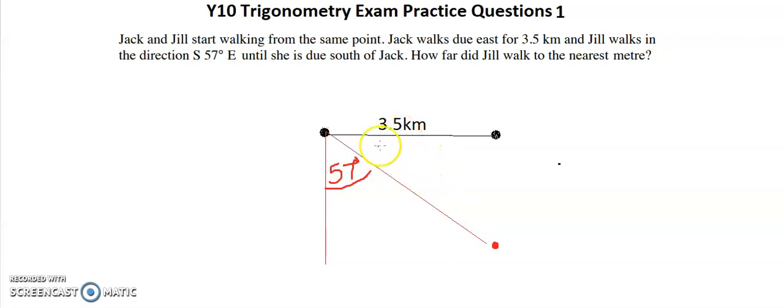So that means I'm just going to work out this angle right here. And this angle would be 90 take away 57, which equals 33.